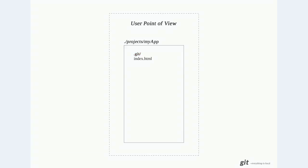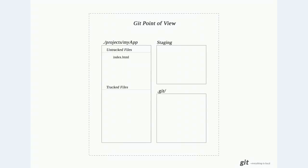From the user point of view, we generally just see a folder and a list of files in our project. From git's perspective, git calls the project folder the working directory. In the working directory it sees files as either tracked or untracked. It also has a staging area for files waiting to be committed to the repository, and the .git directory is where all the tracked changes are held.